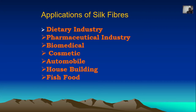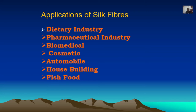Silk fiber is useful in the dietary industry, pharmaceutical industry, biomedical industry, cosmetic industry, automobile industry, house building, and fish food. Each and every part of the silkworm is utilized — nothing is waste. Even the fecal matter of silkworm larvae can be converted into green manure. The dead pupa is used for fish food. The broken silk called ghecha is used in tire industries. Hence, silkworm has the capacity to change from zero to 100.